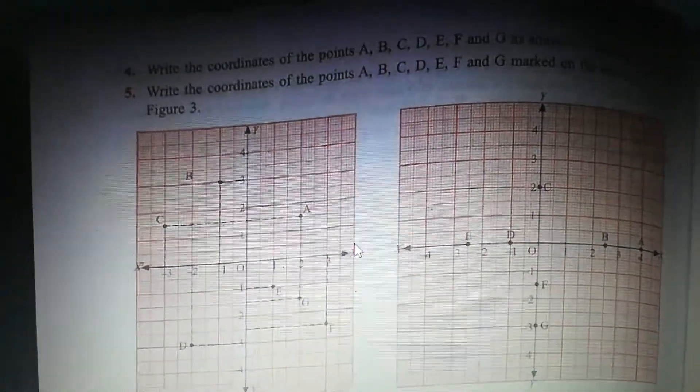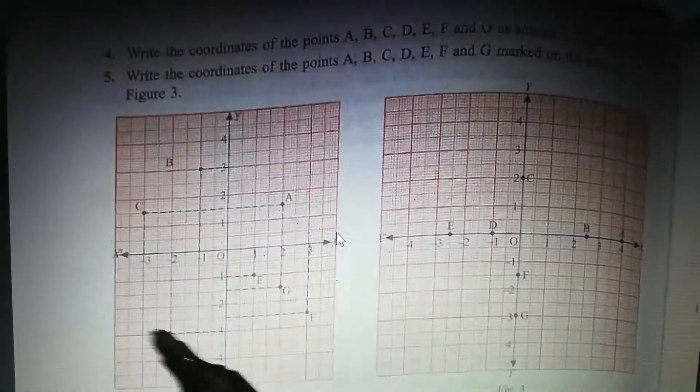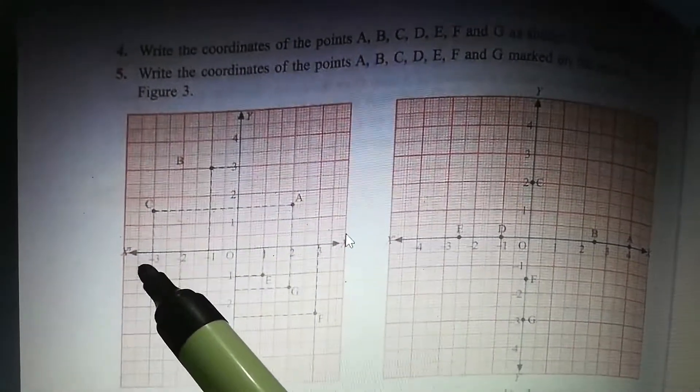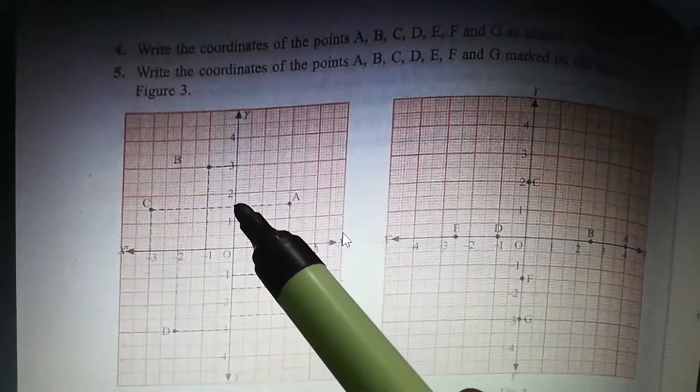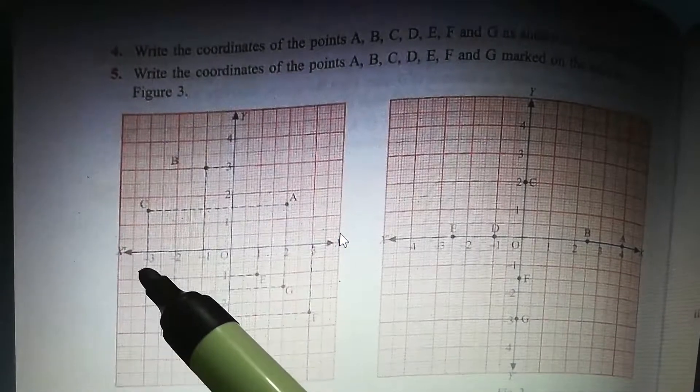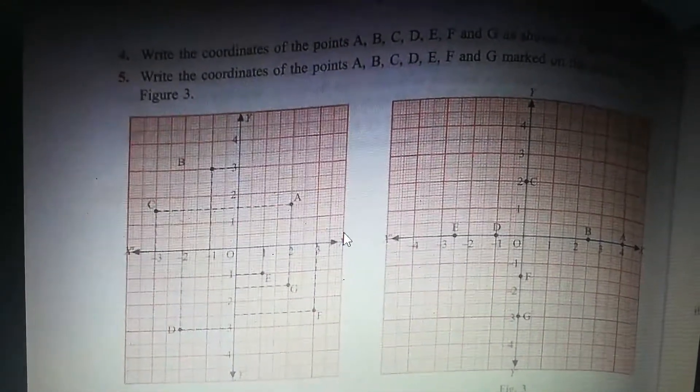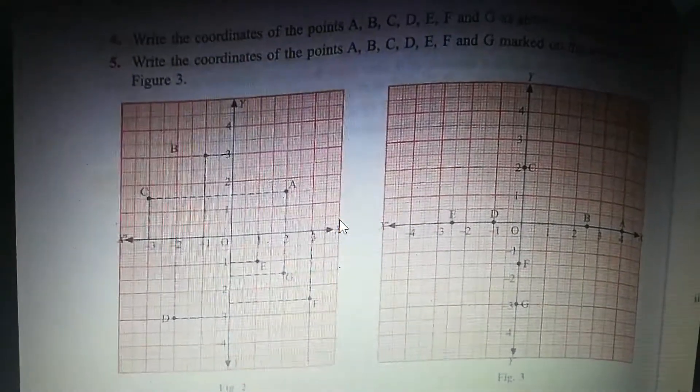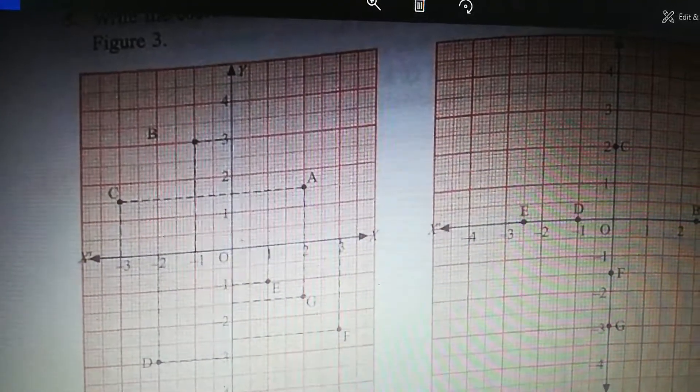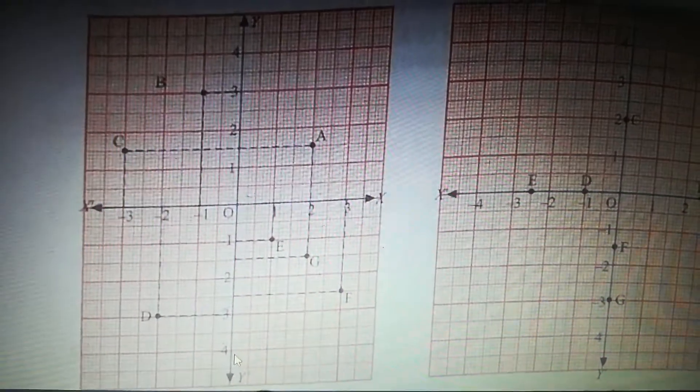So it's minus 1 and 3, point B. So minus 1, 3 is point B. Again, C. You can check C is X is minus 3, Y is middle of this 2, so 1.5. So minus 3 and 1.5.